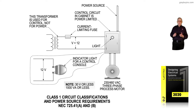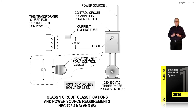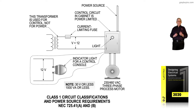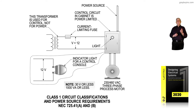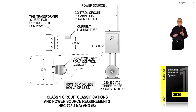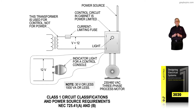In this illustration, we're looking at 30 volts or less and 1,000 volt-amps or less. We have a three-phase power supply to a process motor, and a control transformer usually mounted in a combination starter with a stop and start button on the cover. The transformer taps off 480 volts coming into the contactor and steps that voltage down to a power-limited circuit of 12 volts.